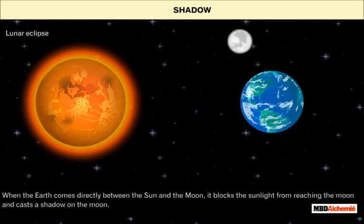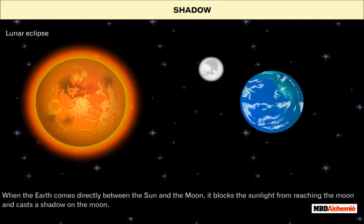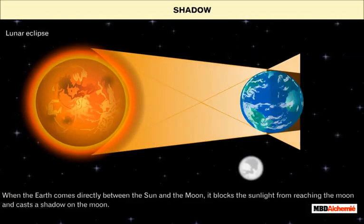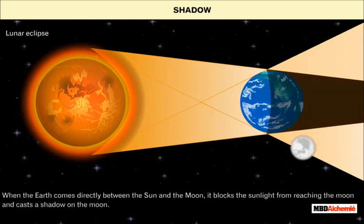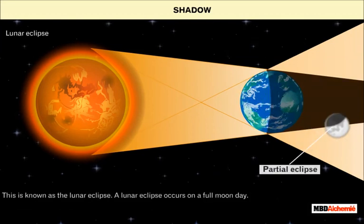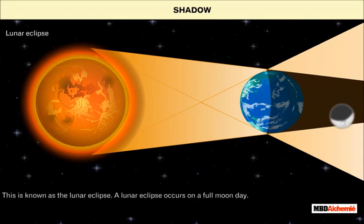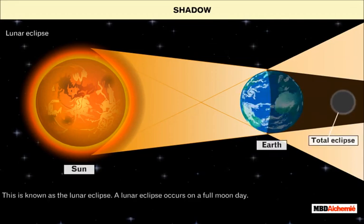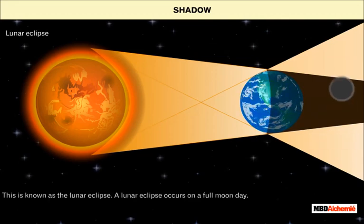When the earth comes directly between the sun and the moon, it blocks the sunlight from reaching the moon and casts a shadow on the moon. This is known as the lunar eclipse. A lunar eclipse occurs on a full moon day.